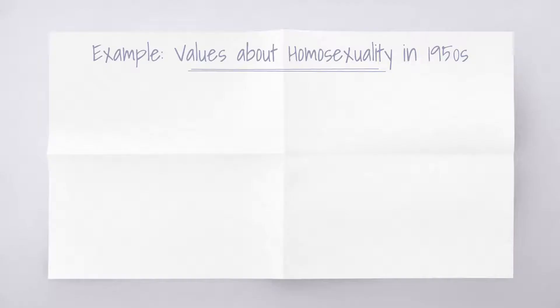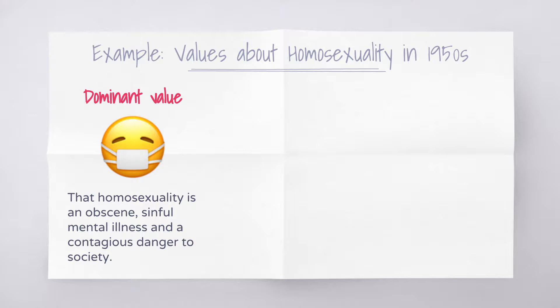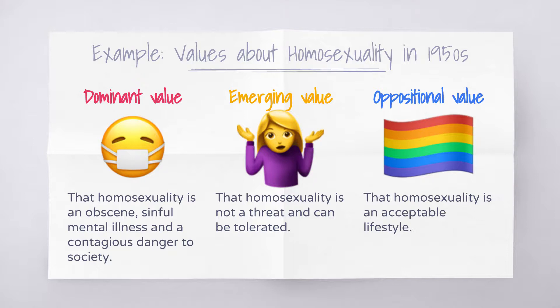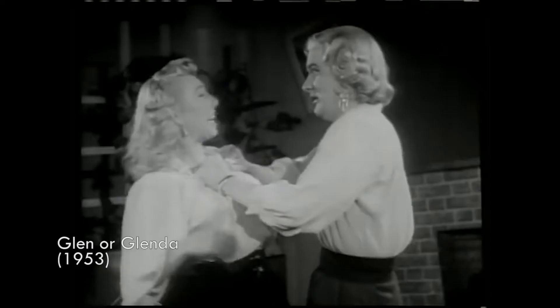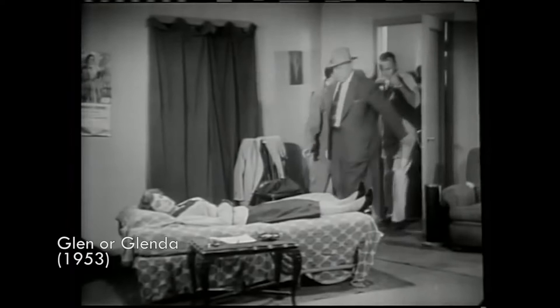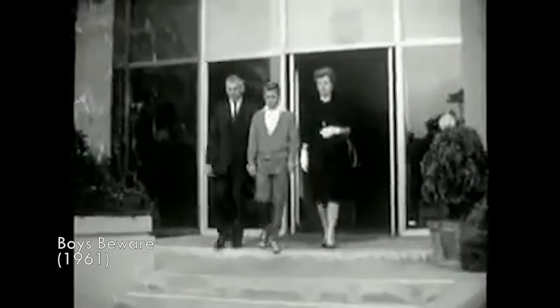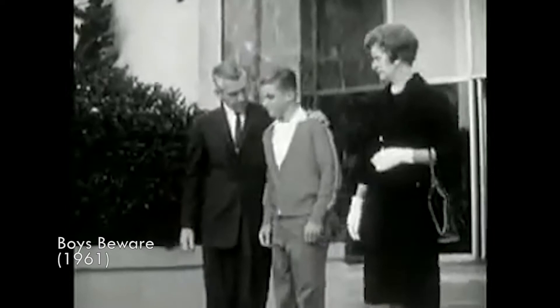Another example: in the discourse of homosexuality in the context of America in the late 1950s and early 1960s, the dominant value would be that homosexuality is a mental illness and a sin. The oppositional value would be that homosexuality is perfectly normal. And an emerging value at the time could be something like that homosexuality isn't a threat and should be tolerated. Now, that emerging value might not be the only emerging value at the time — there could be other emerging values, such as that homosexuality should be eradicated, which is much more closely aligned to the dominant value. So sometimes there aren't only just three values at any given time.